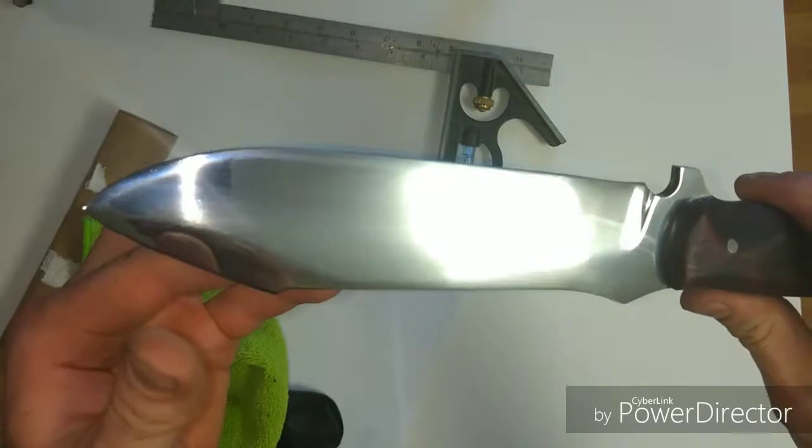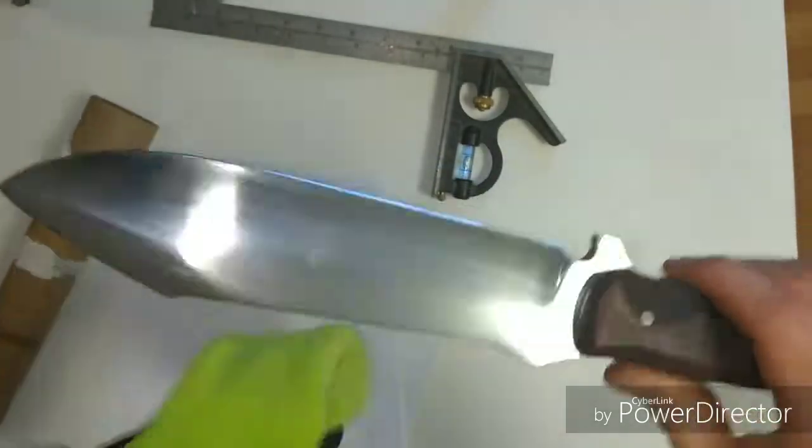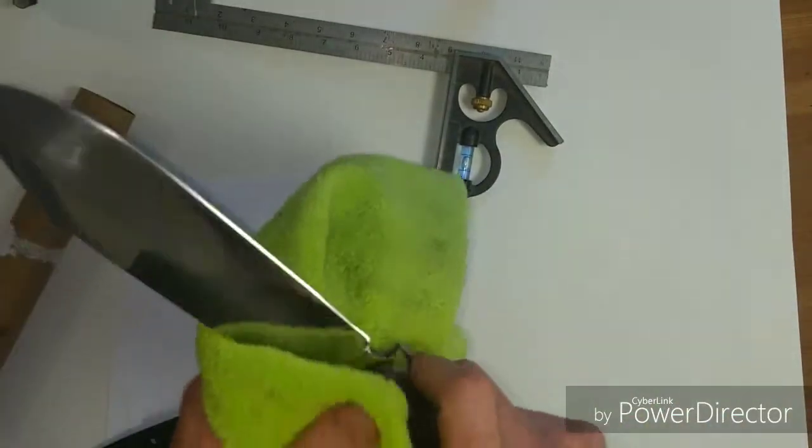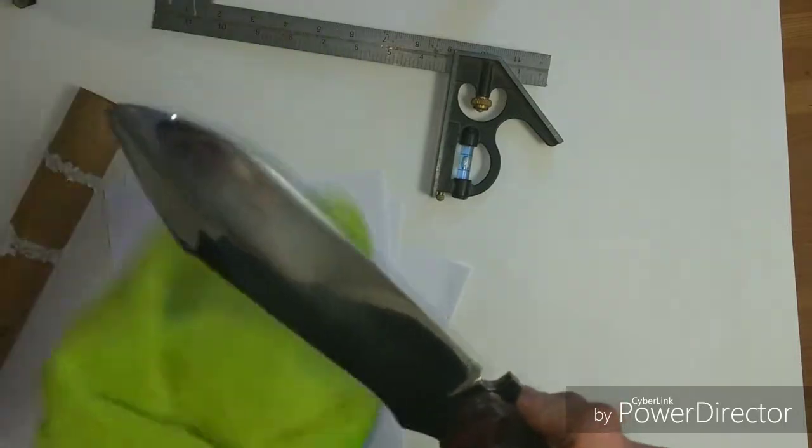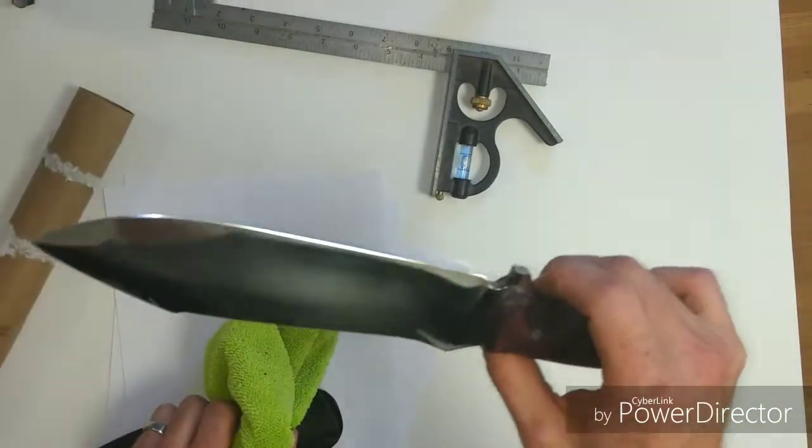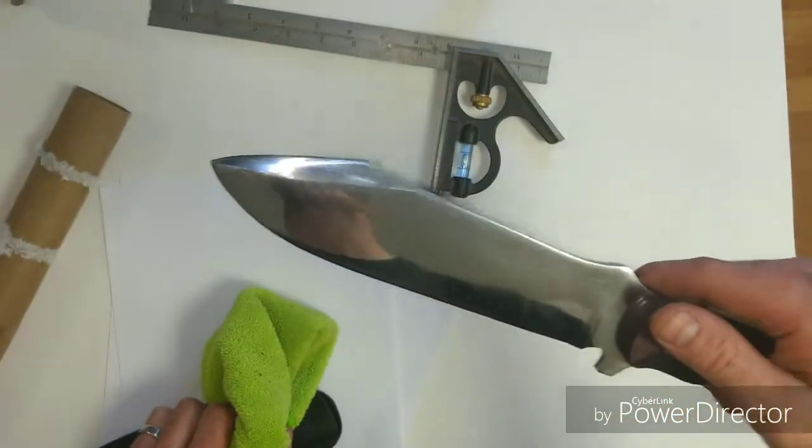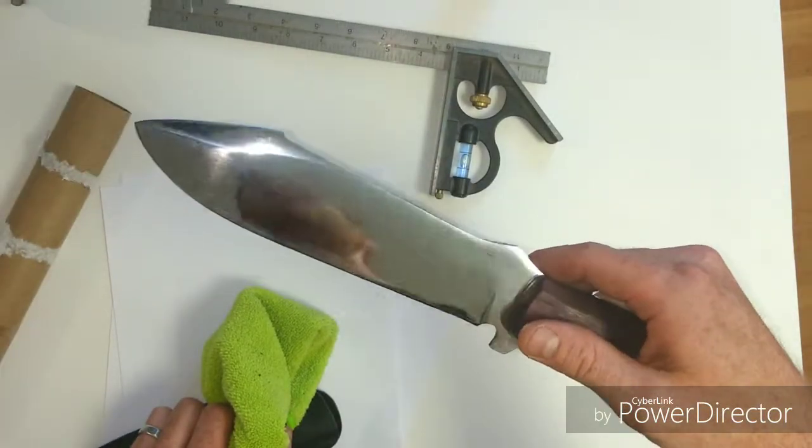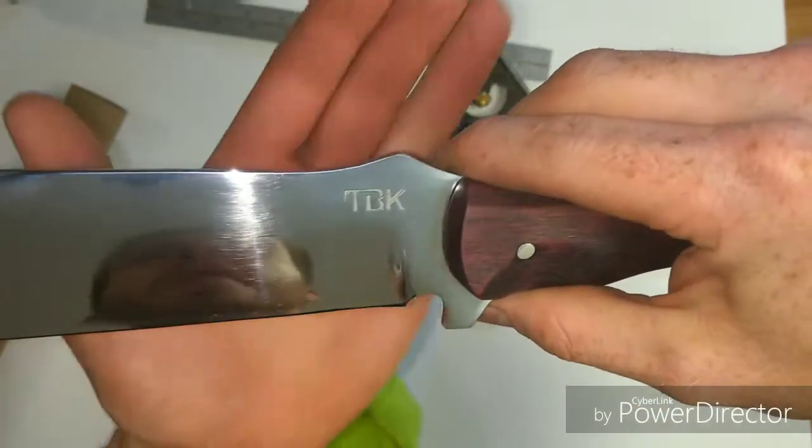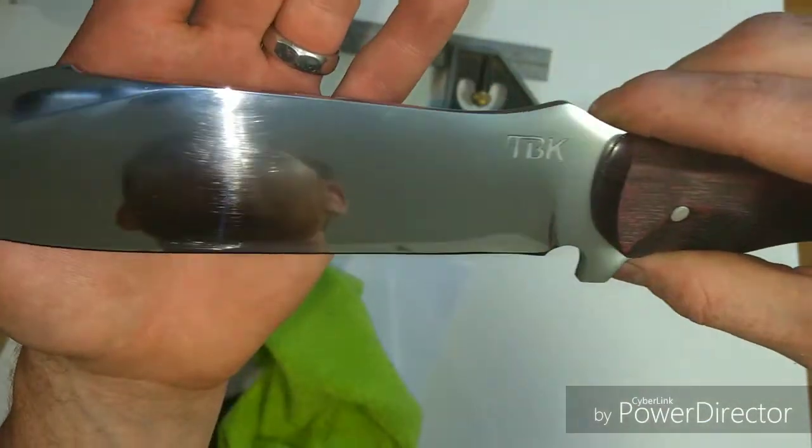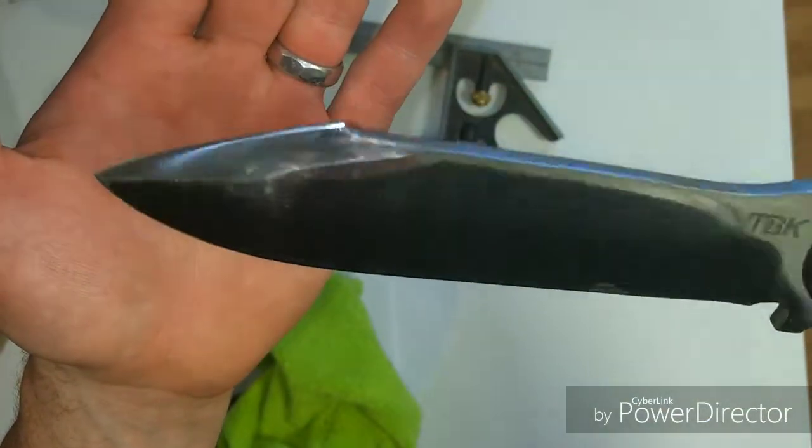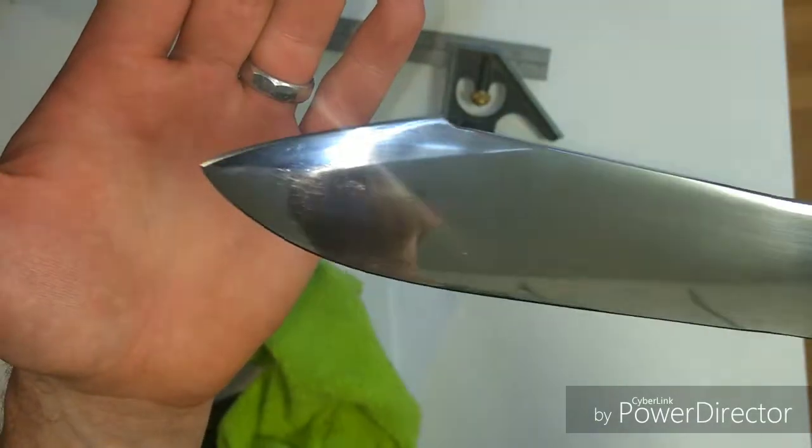I don't know what they call it. I call it a quasi mirror finish. I sand up to 1000 grit and then hit it with a buffer, so it isn't a mirror polish, but it gives a nice finish. A little bit more rust resistant for this high carbon steel. But it doesn't get messed up quite as much as a mirror polish.